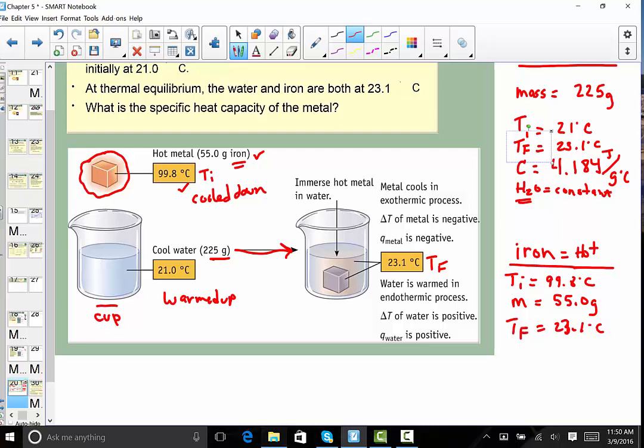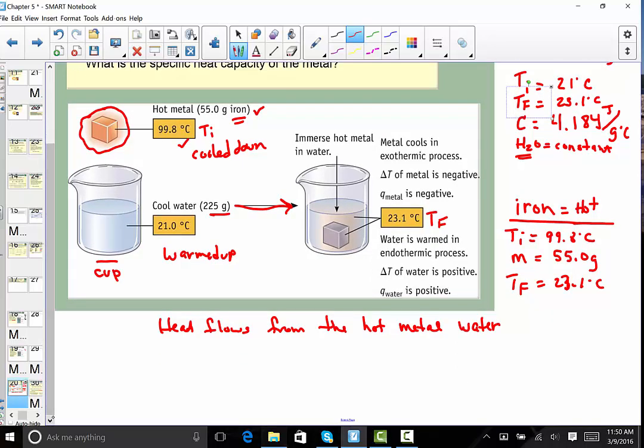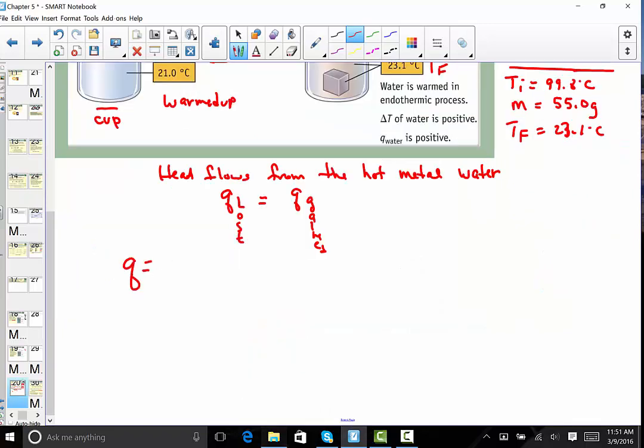What we understand is heat flows from the hot object to the cold object. Heat flows from the hot metal to the cold water. And the first law of thermodynamics is very clear that says heat lost must be equal to heat gained. Q equals Q. Heat lost is equal to heat gained. So heat we know is Q. Heat lost is equal to heat gained. And we also understand that heat can be measured by knowing its mass times specific heat times the change in temperature.